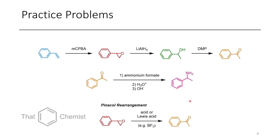I also wanted to mention that if you wanted to get from this directly to the ketone you could actually do a pinacol-type rearrangement, which is where you take an epoxide or a 1,2-diol and treat it with an acid or a Lewis acid — this will rearrange it to a ketone instead of a 1,2-diol or, in this case, an epoxide.